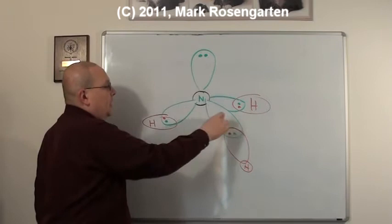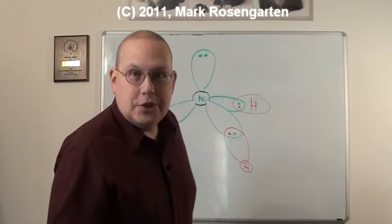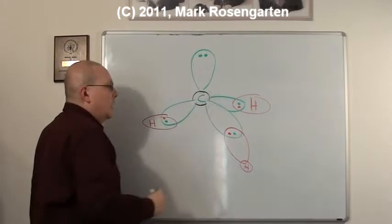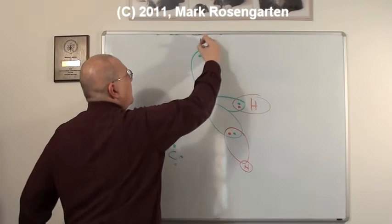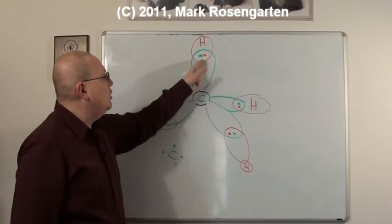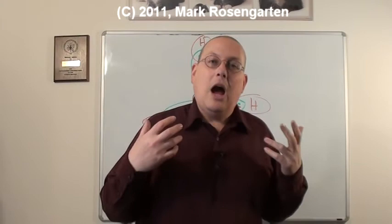So this trigonal pyramidal shape comes from that lone pair forcing these hydrogens down in that direction. Otherwise, the molecule would probably be flat, which is called trigonal planar. This isn't trigonal planar because of that lone pair. If we were dealing with carbon, carbon has four valence electrons and no lone pairs. This molecule is forced into a tetrahedral arrangement where all the bond angles are identical.